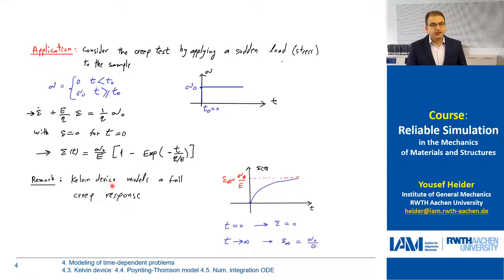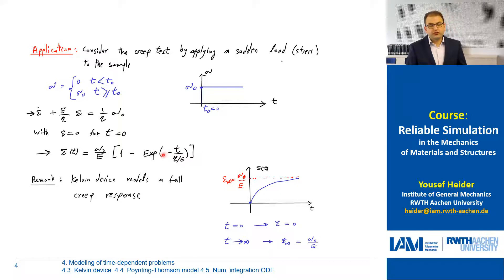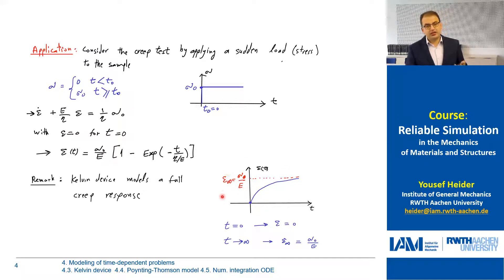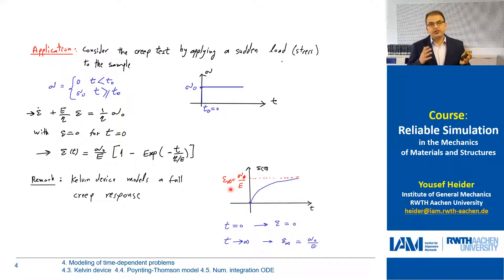Based on this condition, the solution for our strain function will look like this — it's a function of time, and it includes the material parameters. Let's plot this function. As time increases from zero to infinity, the strain will converge to a certain value, which is sigma zero divided by E. For t equal to zero, the exponential function equals one, so the strain will be zero. This is a typical creep response in the modeling. So the Maxwell model alone can describe the relaxation behavior, and the Kelvin model alone can describe the creep behavior.